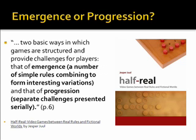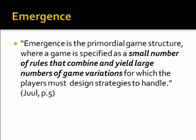This leads to the idea of an emergence game or a progression game, from Jesper Juul. There are two basic ways games are structured: emergence, which means a number of simple rules combining to form interesting variations; and progression, which means separate challenges presented serially. Emergence is the primordial game structure where a small number of rules combine and yield a large number of game variations for which the player must design strategies.